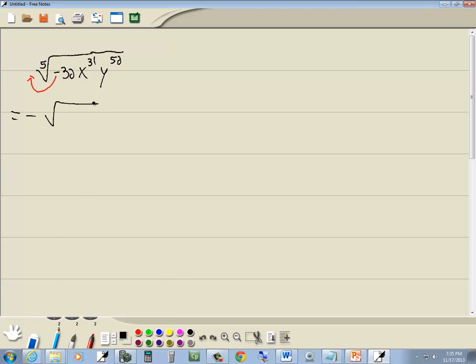So we've got negative fifth root of 32, x to the 31st, y to the 52nd.